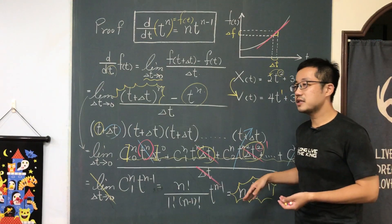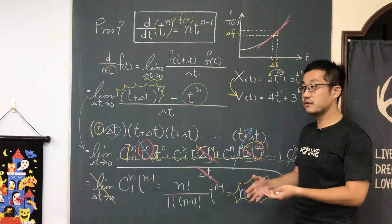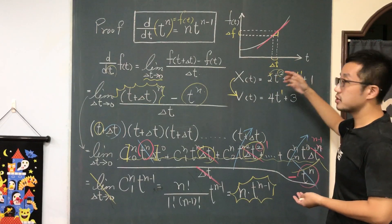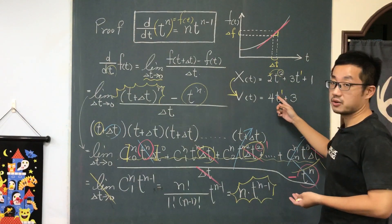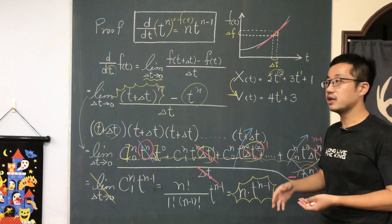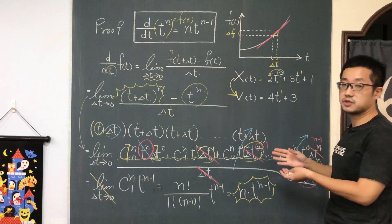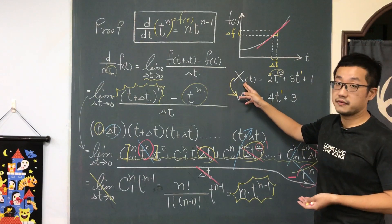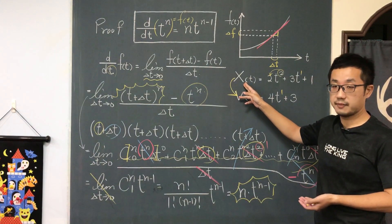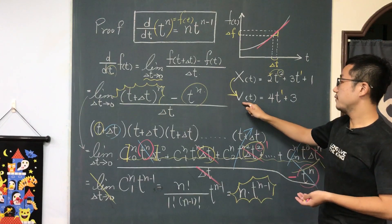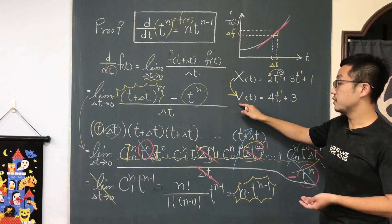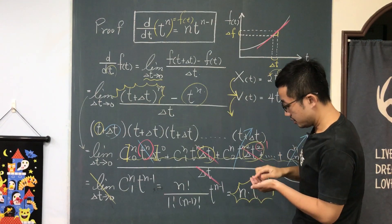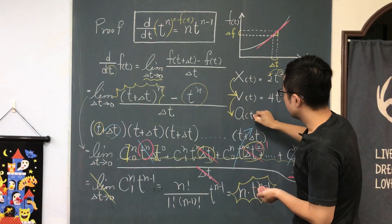This explains why we take the derivative by multiplying a term by its power and subtracting 1 from the power. In a physics class, we use these tools to find the velocity as a function of time by taking the derivative of position as a function of time. And we can also take the derivative of velocity to find the acceleration as a function of time.